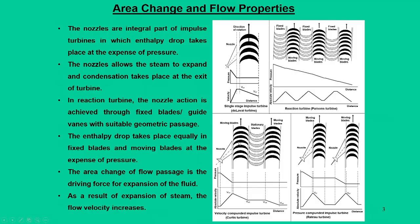Let us try to understand what is the effect of area change on the flow properties, ideally speaking with respect to nozzles. In our previous studies when we dealt with impulse and reaction turbines, we have seen that nozzles are integral components. For example, in a single stage impulse turbine, nozzles feed the steam for rotation of the blades. In a single stage turbine and when you go for compounding, a single nozzle supplies the steam to all the moving blades arranged in a particular fashion.